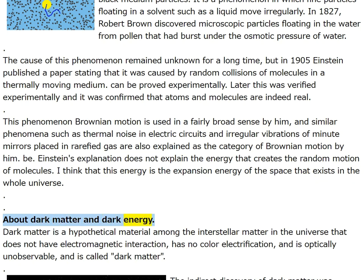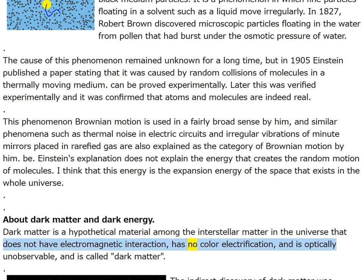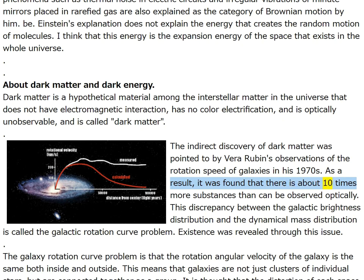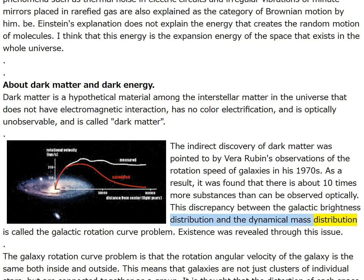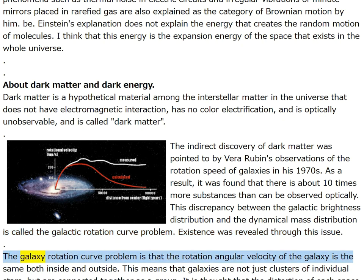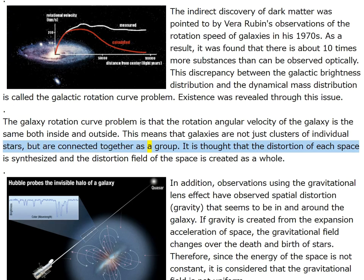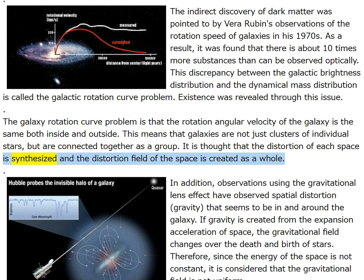About dark matter and dark energy: dark matter is a hypothetical material in the universe that does not have electromagnetic interaction, has no color or electrification, and is optically unobservable. The indirect discovery of dark matter was pointed to by Vera Rubin's observations of the rotation speed of galaxies in the 1970s — there is about 10 times more substance than can be observed optically. This discrepancy between galactic brightness distribution and dynamical mass distribution is the galactic rotation curve problem: the rotation angular velocity of the galaxy is the same both inside and outside.